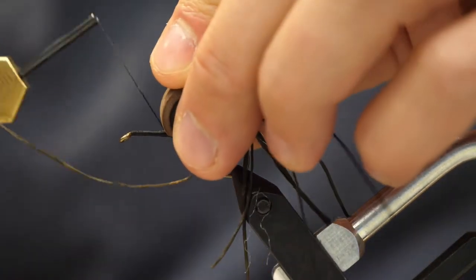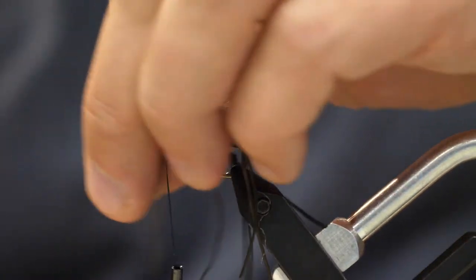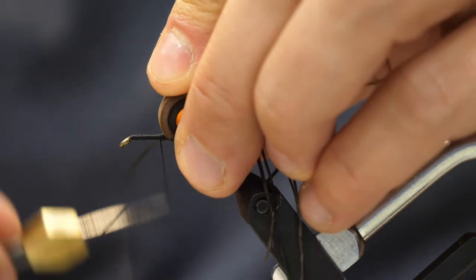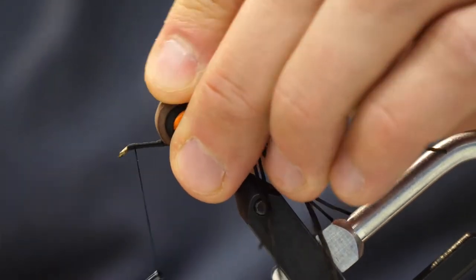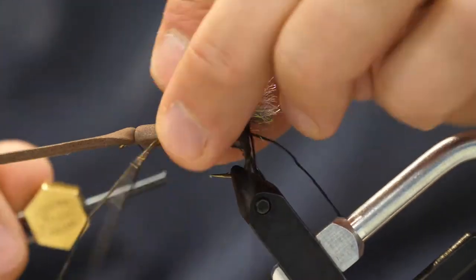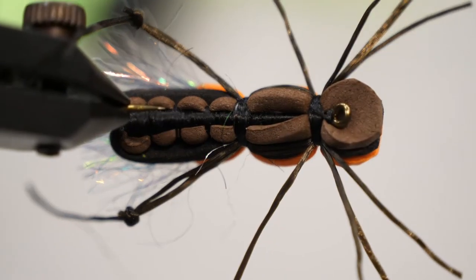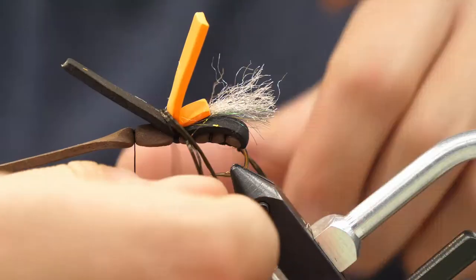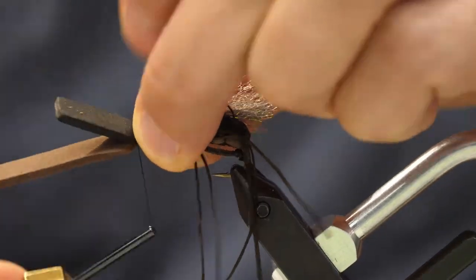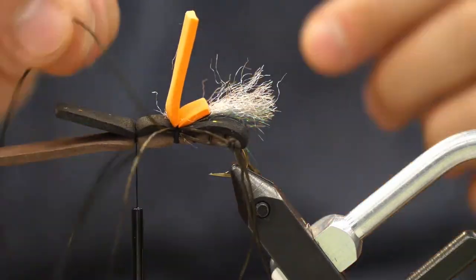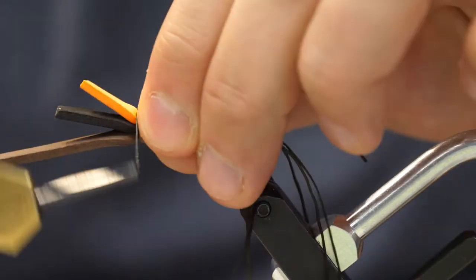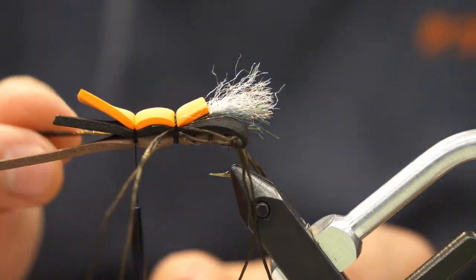Now we're going to wrap the thread up to just behind the eye of the hook, and this is going to be our larger thorax section. I'm going to tie down the first piece of brown foam, and again, not too tight. We want it to wrap around but not conceal the thread body underneath. Then we're going to put down our second layer of foam, just a nice gentle wrap, and then the high-vis part on top, and now we've got a nice thorax section here.